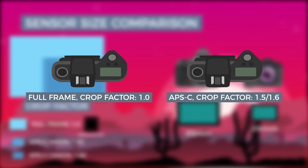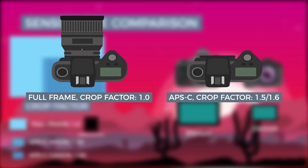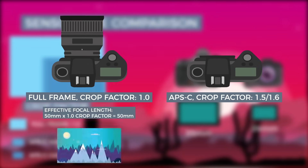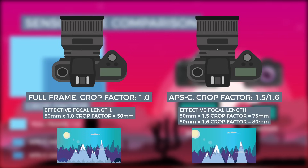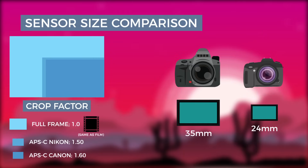The actual focal length of the lens remains unchanged, but switching camera bodies that have different sensor sizes will change what the picture will look like. For example, if I have a 50 millimeter lens on a full frame camera, its effective focal length will be 50 millimeters. But if I swap it to a crop sensor camera with a crop factor of 1.5, the effective focal length suddenly becomes 75 millimeters.